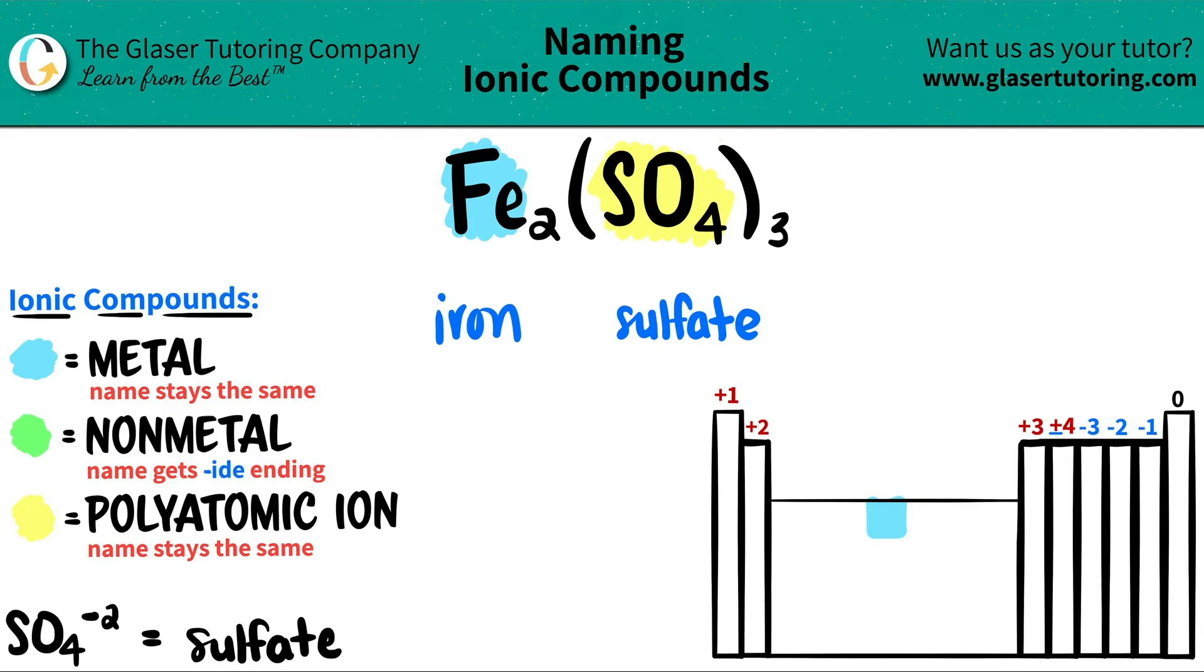Now, since this is an ionic compound, I just have to make sure if I need a Roman numeral. And we need Roman numerals for transition metals. Iron is part of this block. That's where your transition metals are. So we need a Roman numeral. The Roman numeral is always the charge of the metal. In this case, we got to find out the charge of the iron, but that's pretty simple.